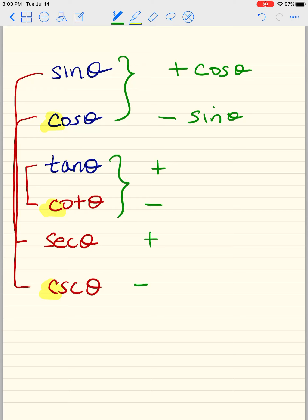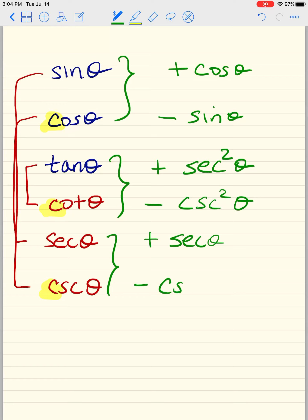Tangent and cotangent are powerful. Tangent always goes with secant, and cotangent always goes with cosecant — they need a power. Secant and cosecant are right in between, so they get themselves followed by the person they're always with. Secant is always with tangent, and cosecant is always with cotangent.